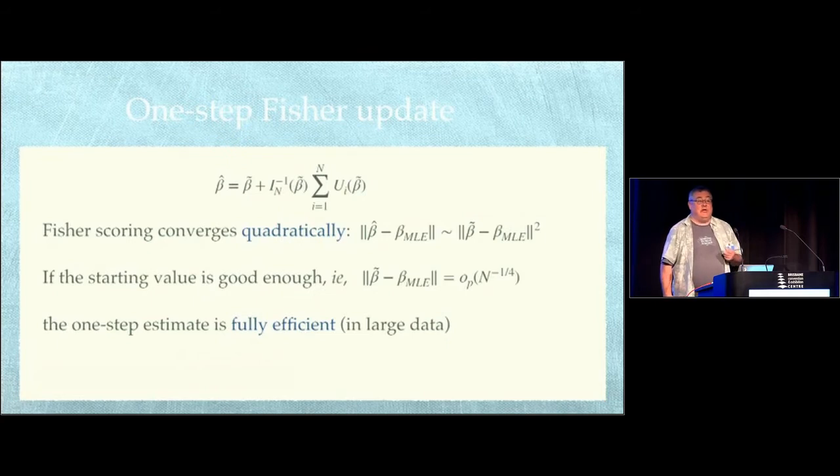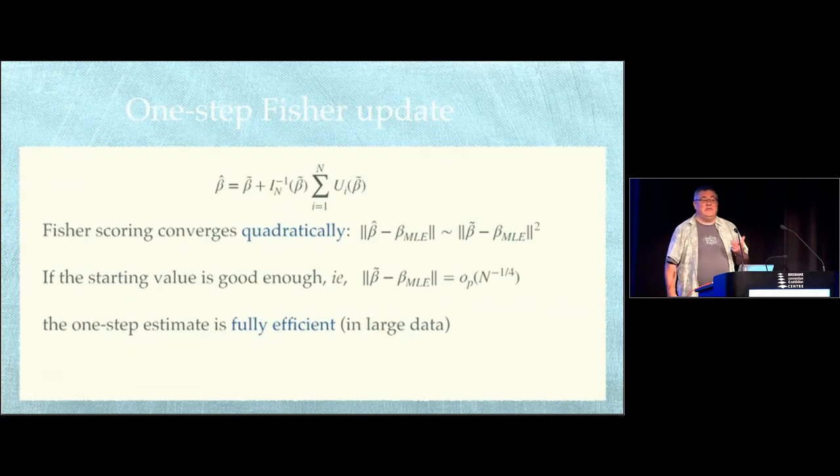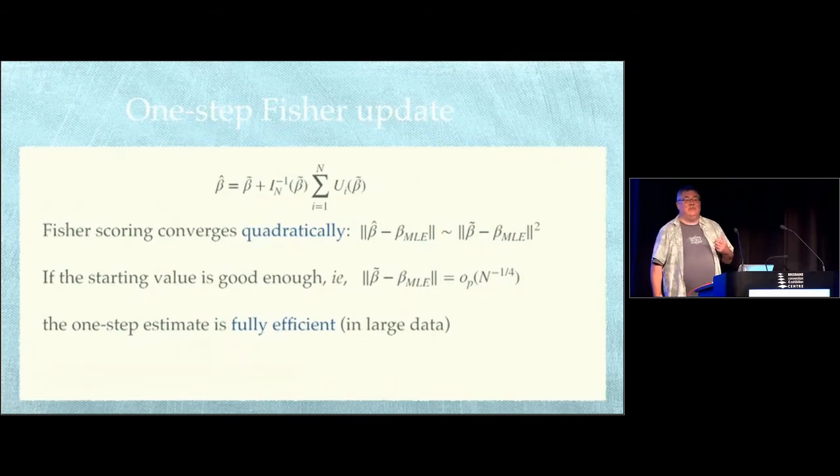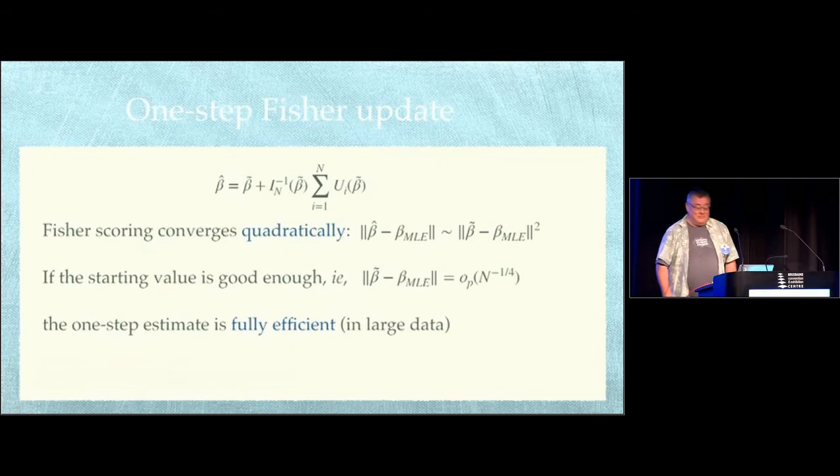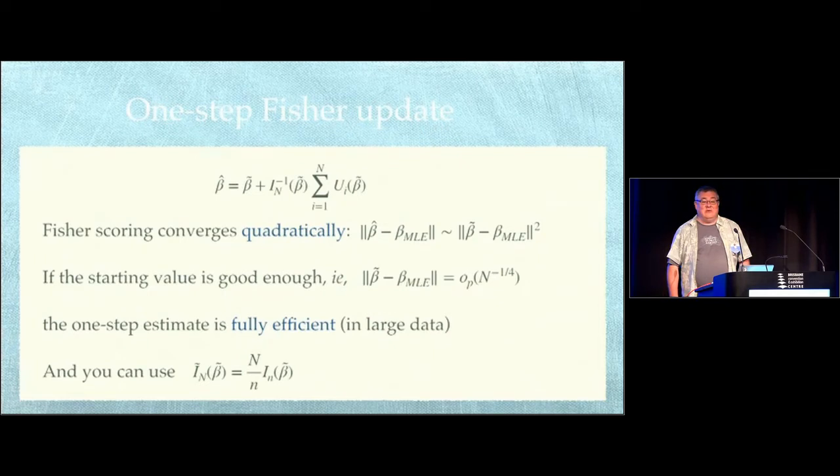Lots of people know that root n consistent is good enough for that starting point. Fewer people know that you only need to do better than fourth root of n. And the reason fewer people know is that this is largely a completely useless fact, because if you can get fourth root n convergence, you can get root n convergence. The reason it's useful is that you can get fourth root n convergence just by using a small subsample. Also note, you don't need to compute the full information matrix. You can just rescale the one you got for the subsample.